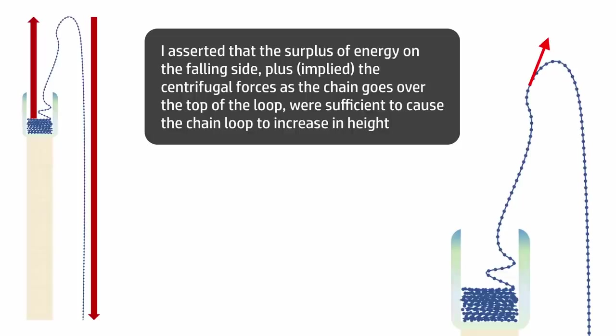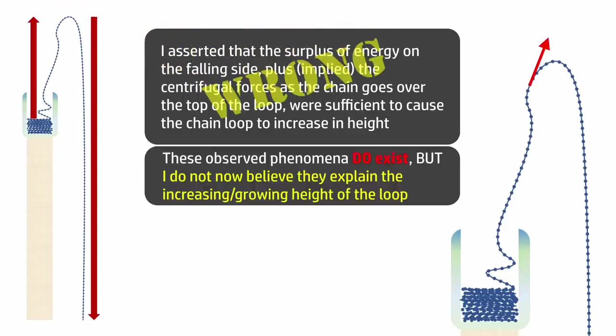In my previous video, I asserted that the chain fountain grows simply because the falling side of the system is more energetic than the rising side, and because ball link chain has certain unique properties that make it behave a lot like fluid. In short, I was pretty confident that the loop rises just because of centrifugal forces as it goes over the top, and because those forces were increasing as the chain accelerated. After viewing Steve's update, I'm convinced now I was wrong about that.